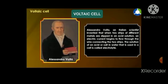When two strips of different metals are dipped in an acid solution, an electric current begins to flow through the wire connecting the two strips. The solution of an acid or salt in water that is used in a cell is called electrolyte.